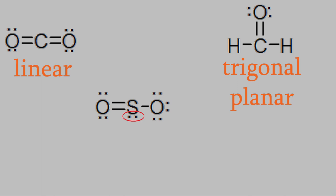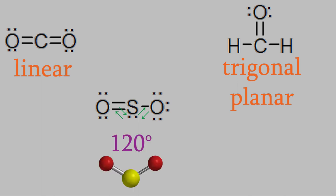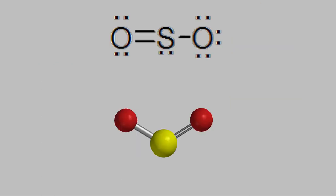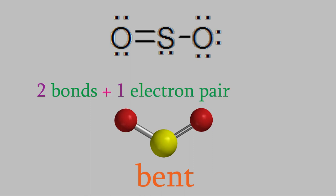Instead, the unshared pair will push away the electrons in the bonds so that the bonds are at a 120-degree angle, just like in the formaldehyde molecule. However, this isn't a trigonal planar molecule, because the electron pair isn't visible when we look at the atoms. We only see the two bonds, and we refer to this shape as bent. The important thing to learn here is that in order to know what the shape of a molecule is, it's not enough to just know how many bonds there are. We also have to know how many unshared electron pairs are on the central atom. It's the total number of bonds plus the electron pairs that tell us what the shape will be.